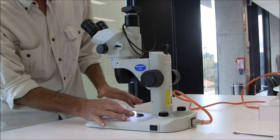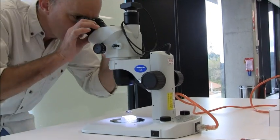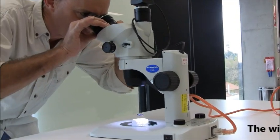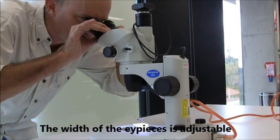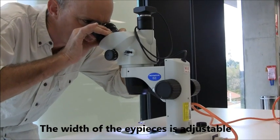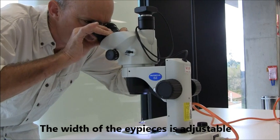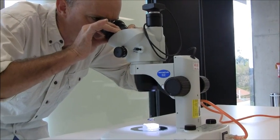Put a specimen underneath, look down through the microscope, and adjust the interocular distance, or interpupillary distance, until you can see the image using both eyes.